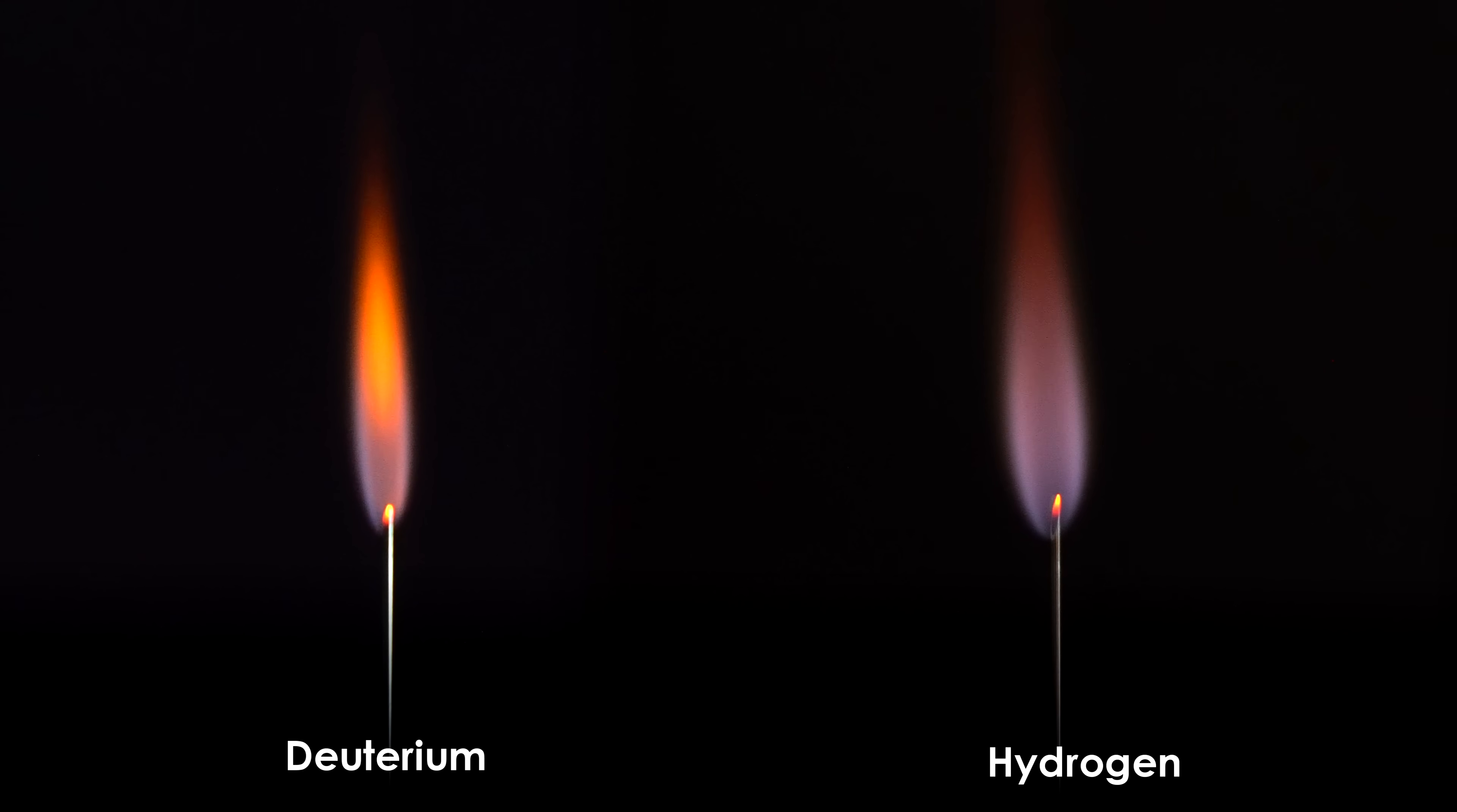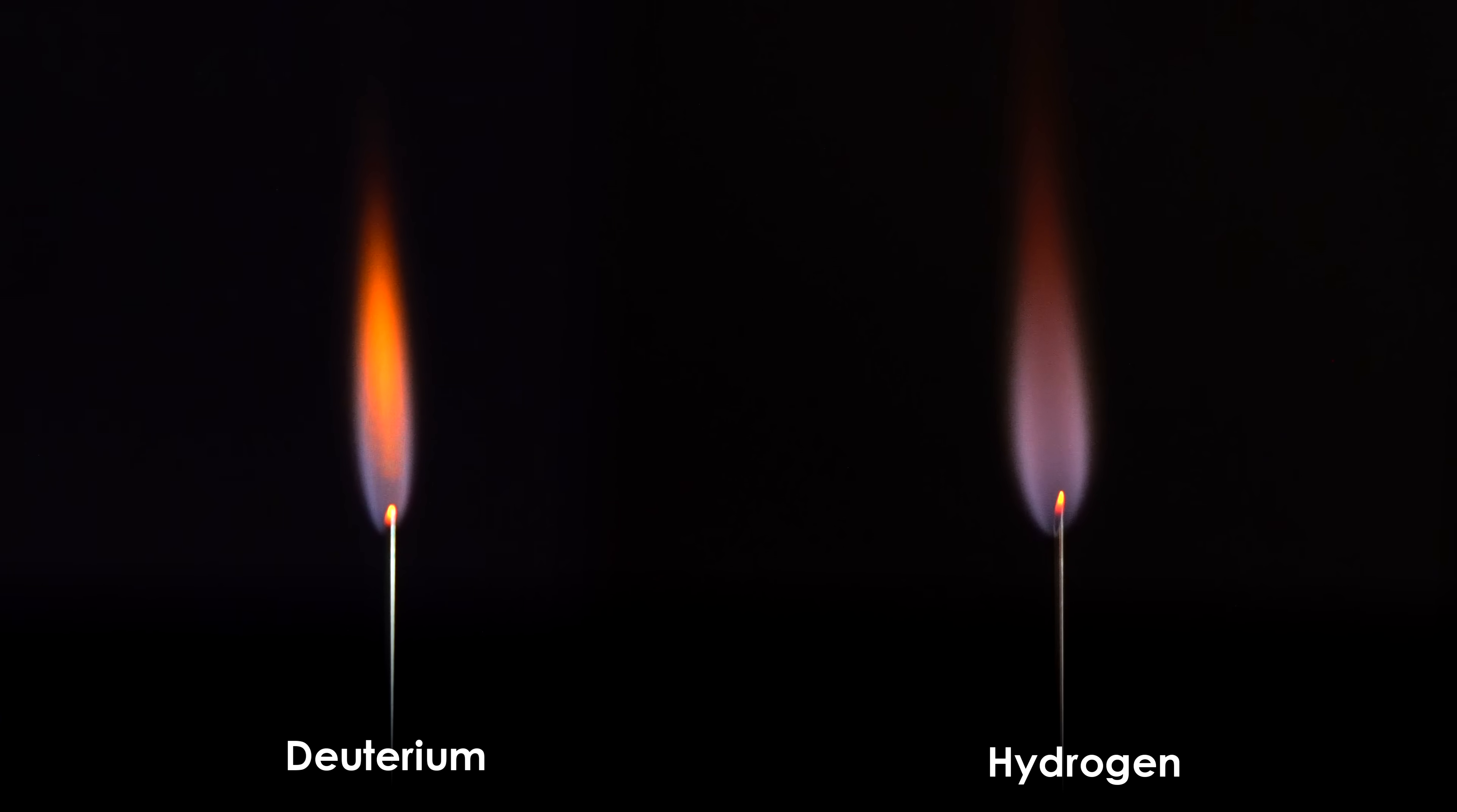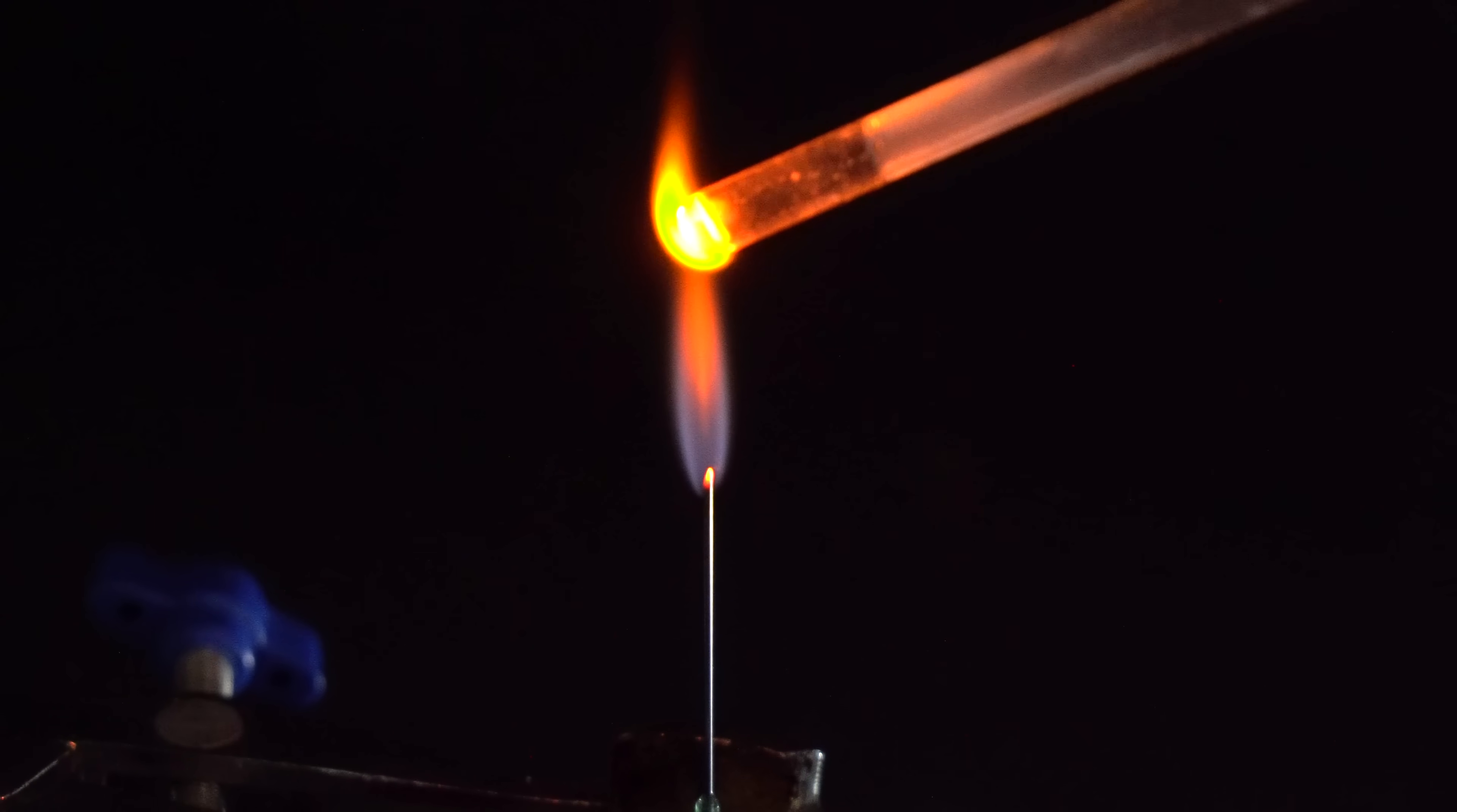These two footages show how deuterium and hydrogen burn. There seems to be a minor difference between the two flames. Deuterium flame is a bit reddish on top, whereas the flame of pure hydrogen is more consistent. Both deuterium and hydrogen flames produce a lot of heat in air. Their temperatures can reach up to 1600 degrees Celsius. Such a heat can easily melt glass.